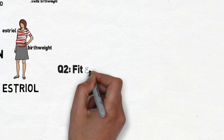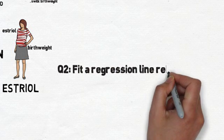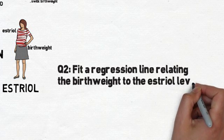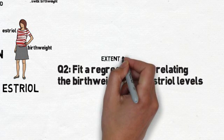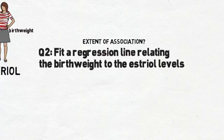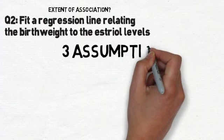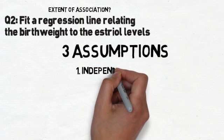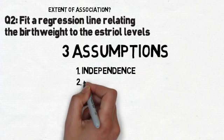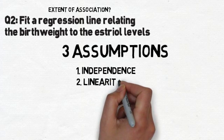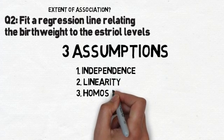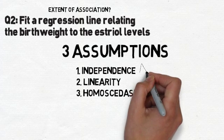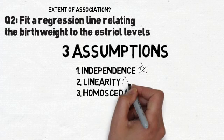Question 2 asks us to fit a regression line relating birth weight to estriol levels. The regression line will tell us to what extent the variables are associated. We need to assume three things about the data before we can assess the degree of association: independence, linearity, and homoscedasticity. We'll check for independence and linearity first, then run the regression model before looking at homoscedasticity.